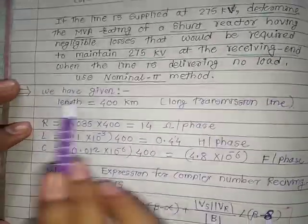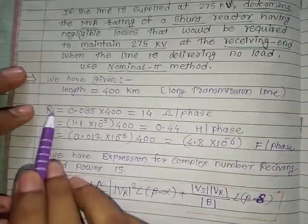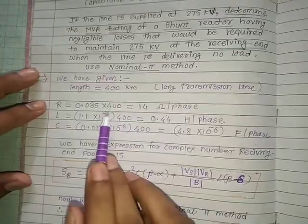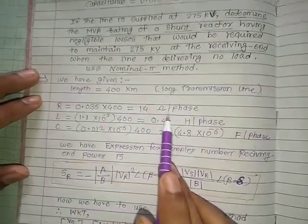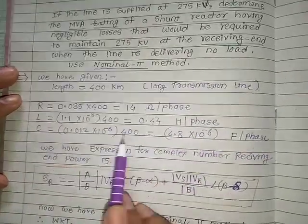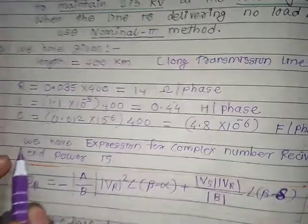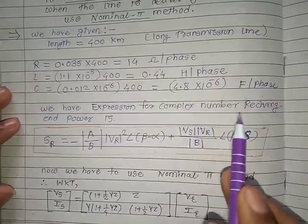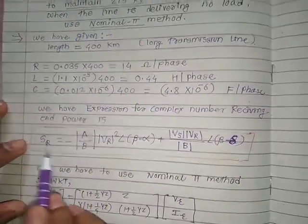We have been given the length as 400 km, so this is a long transmission line with R, L, and C. We need to convert to per-phase values by multiplying by the length of the line: R = 14 ohm per phase, L = 0.44 henry per phase, and C = 4.8×10⁻⁶ farad per phase. Now we have the expression for complex power at the receiving end.